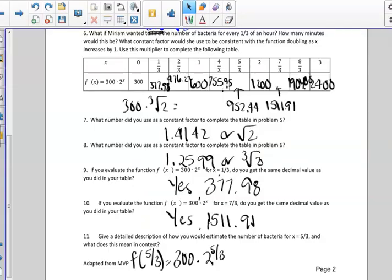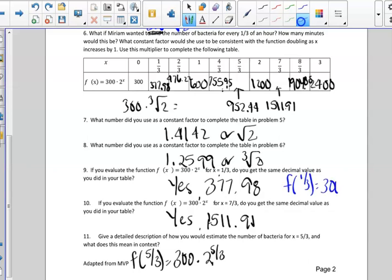And then if we were to evaluate, and we plugged in one-third into our function, so what that's saying is if we do f(1/3), and we plug one-third in for x, it's asking us will we get the same decimal values we did in the table, and yes, we can double-check that. And the same thing on 10, if we plug in seven-thirds for x, times two to the seven-thirds,